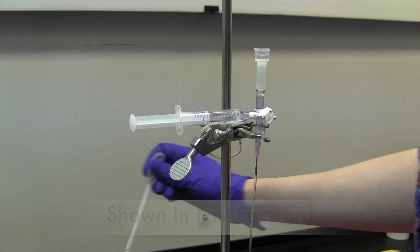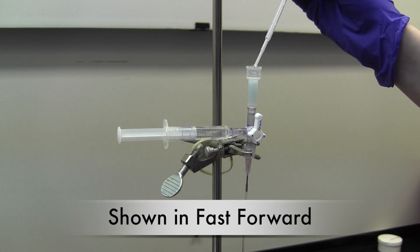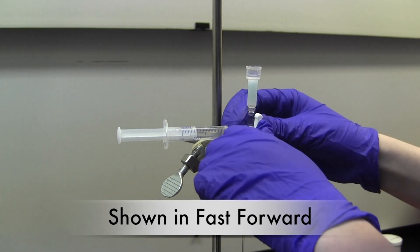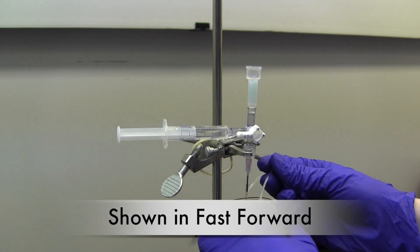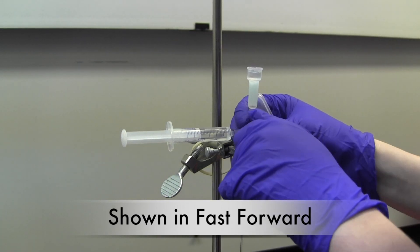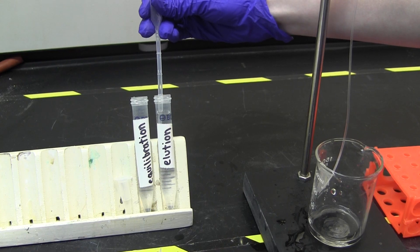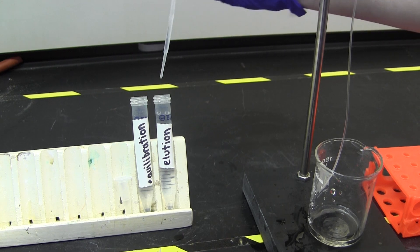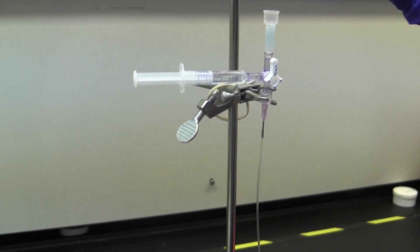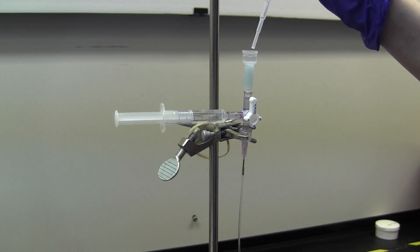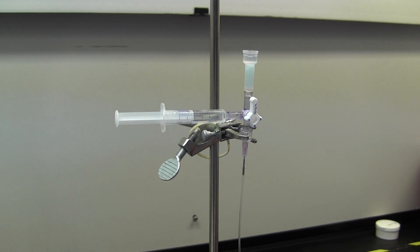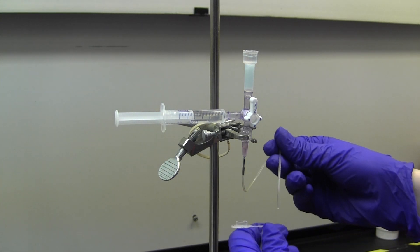Next, you will switch to using the elution buffer. Place 0.25 milliliters of buffer onto the column and let it run through slowly so it can pull off the target protein. Discard this fraction. Load another 0.5 milliliters of the buffer onto the column and discard it. Add the final 0.5 milliliters of elution buffer onto the column and collect it in a separate 1.5 milliliter bullet tube.